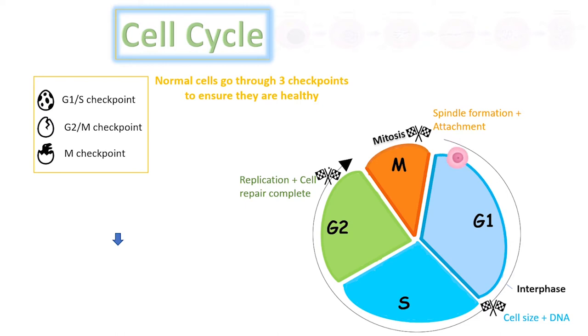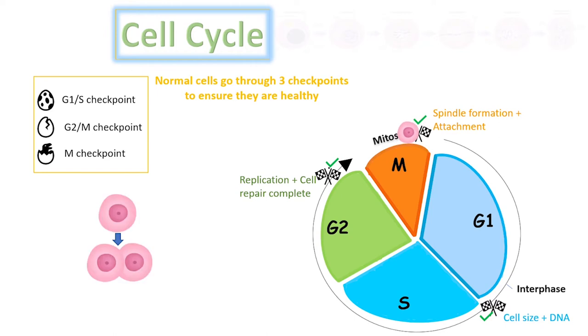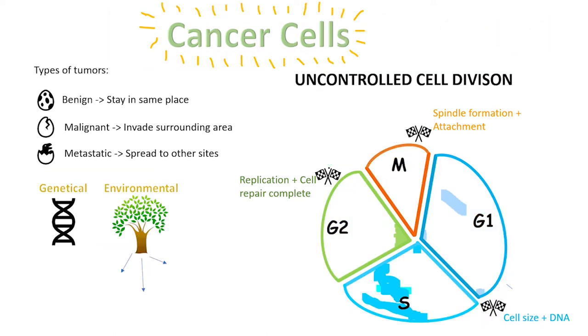The last checkpoint is to make sure the formation of two daughter cells is complete. Here is an illustration depicting a healthy cell that has successfully gone through all the checkpoints to divide.